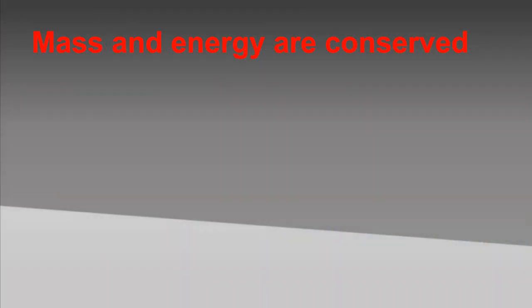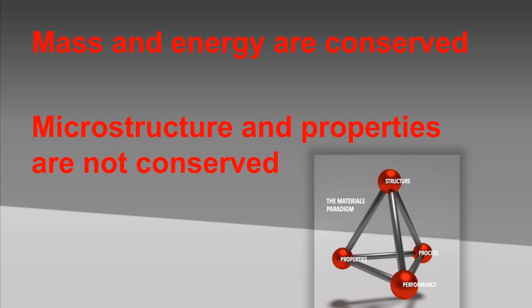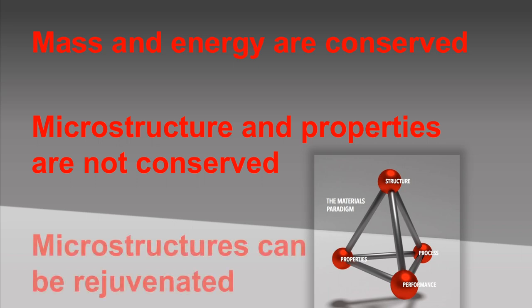Mass and energy are conserved quantities. This motivates us to develop elements for a circular economy. However, it is quite interesting to note that microstructures, which actually determine most of the properties of materials, particularly of load-bearing metallic alloys, are not conserved quantities. This simple but interesting aspect brings up the question whether microstructures can actually be rejuvenated by adequate processing, rather than scrapping the part that is taken out of service. Alternatively, one could even think about the rejuvenation of microstructures and the associated properties while a part is still in service.